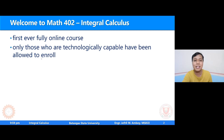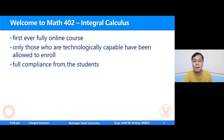So anong ibig sabihin ito? Kung enrolled ka sa course na ito, that means you have the access to technology — meron kang stable internet connection at may makagamit kang device kung saan maka-access ka ng online learning. Meron kang tablet, meron kang cellphone, o kaya ay meron kang PC. That is why, when it comes to compliance, I will be more strict pagdating sa mga requirements. It's expected that students will be fully compliant doon sa mga course requirements natin, kasi mas prepared na tayo this time. So once again, I'd like to remind full compliance from the students when it comes to requirements. Magiging strict na tayo ngayon.